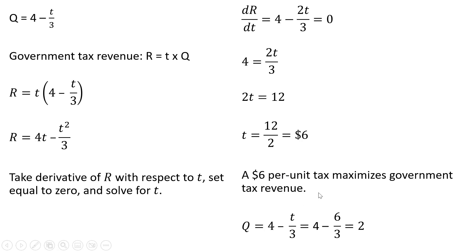To get the amount of output that will be taxed in this market, take our Q equation. For t we're going to substitute in $6, the amount of the tax. The number of units that are going to be taxed here is 2. So the government would collect tax revenue of 6 times 2, or $12. We'll see that on the next slide.